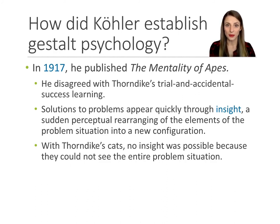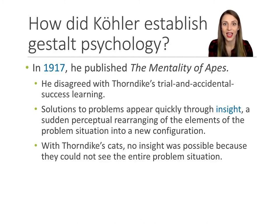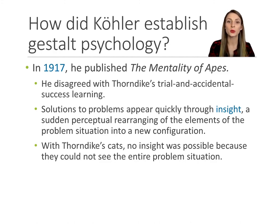Their solution to the problem of the banana hanging from the ceiling came quickly through insight. They all of a sudden realized they could stack those crates to get higher and closer to the bananas. Admittedly, cats are not as smart as primates, so it could be that Thorndike was studying cat learning and Köhler was studying chimpanzee learning. But they definitely disagreed on how learning happens: Thorndike said gradually over time through trial and error; Köhler said more quickly by reconfiguring the problem in front of us.